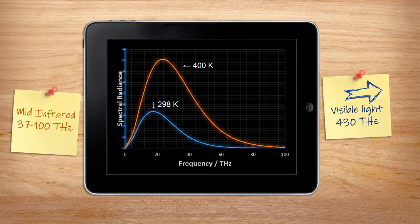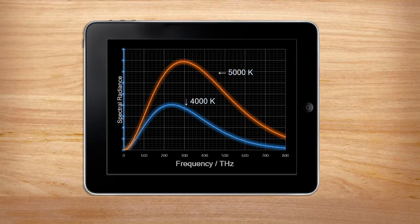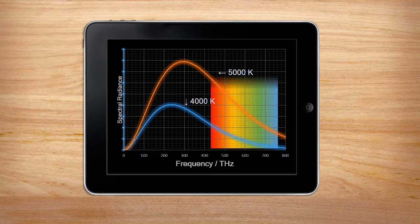Objects at room temperature emit in the mid and far infrared regions, but emit no visible light. This is why we need thermal imaging cameras to see most warm or hot bodies. But as temperature increases into the hundreds or thousands of Kelvin, we start to see it, first as a faint red glow around 2000 Kelvin, before moving further and further into higher energy regions.